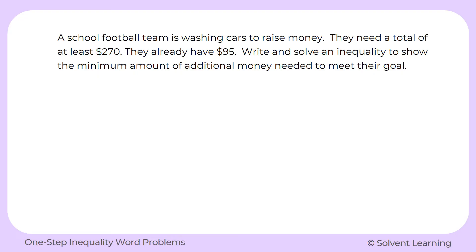Let's look at one more example. A school football team is washing cars to raise money. They need a total of at least $270, and they already have $95. Write and solve an inequality to show the minimum amount of additional money needed to meet their goal. The football team needs at least $270, they already have some of the money, and we need to figure out how much additional money they need to hit that goal.